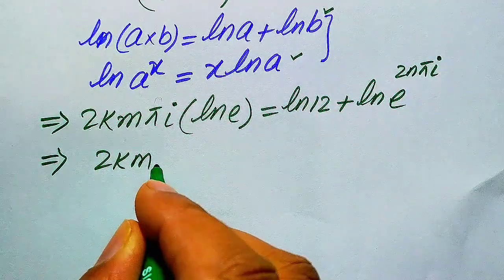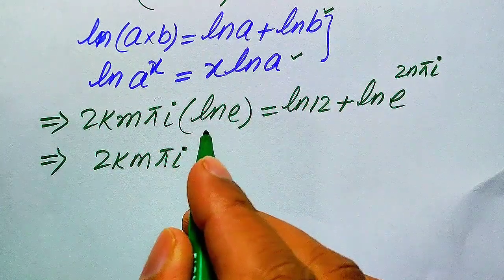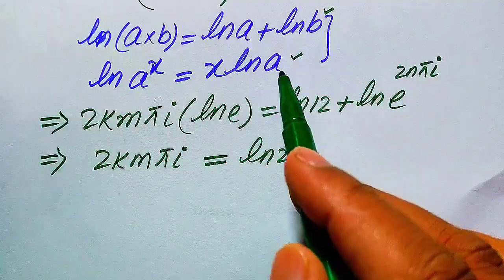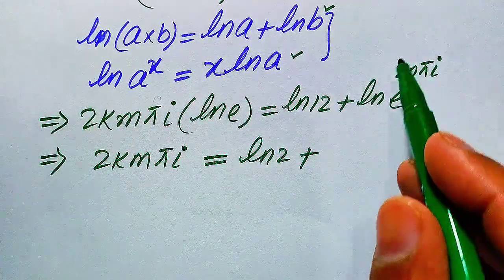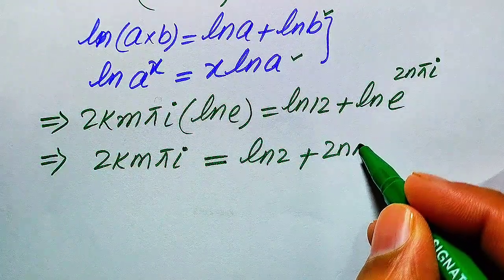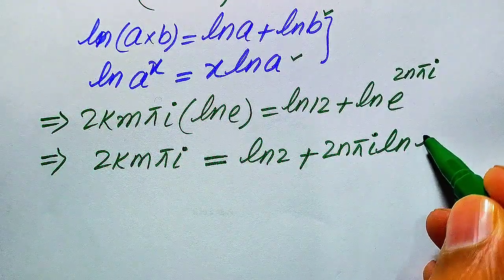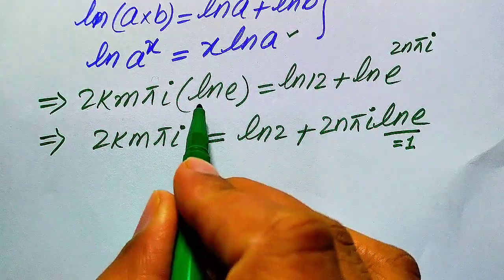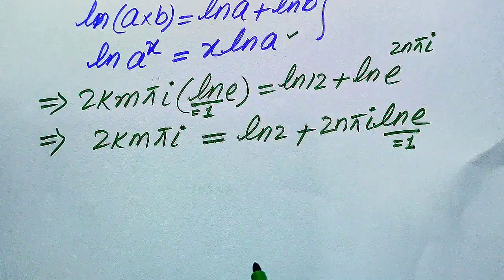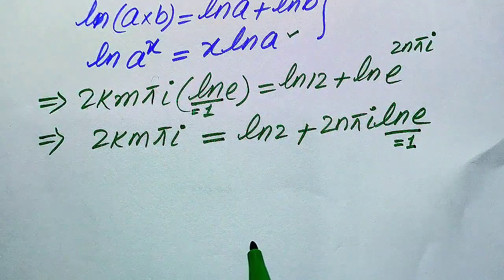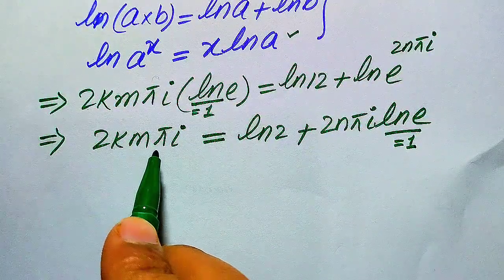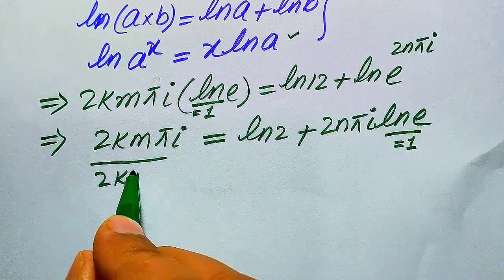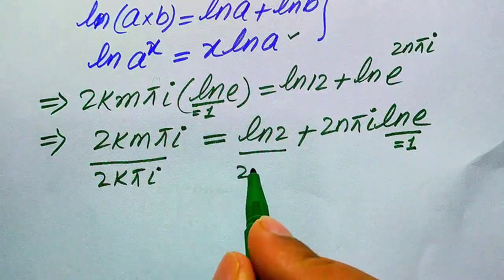Simplifying: 2km·π·i times log e equals log 12 plus 2n·π·i times log e. Since log e equals 1, this becomes 2km·π·i equals log 12 plus 2n·π·i. To find the value of m, we divide both sides by 2k·π·i.